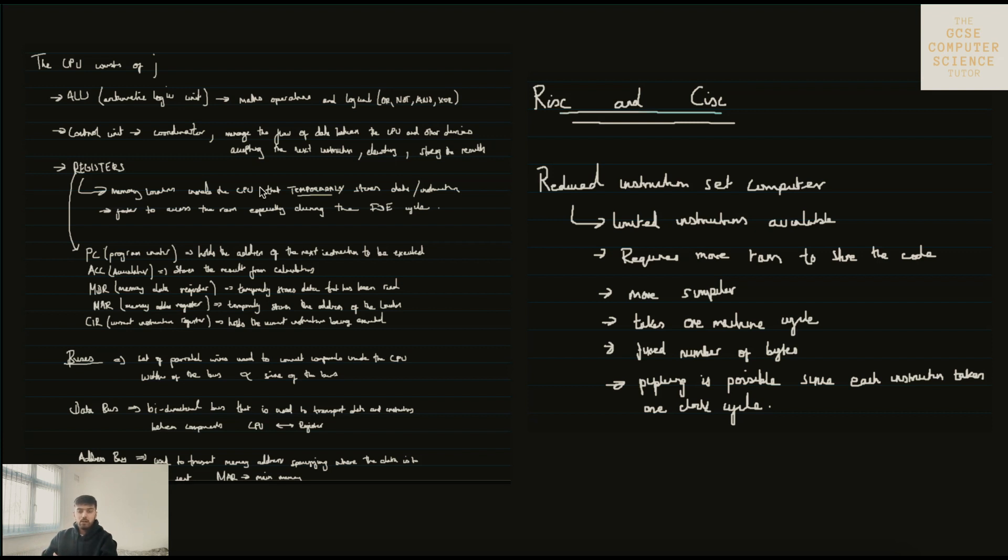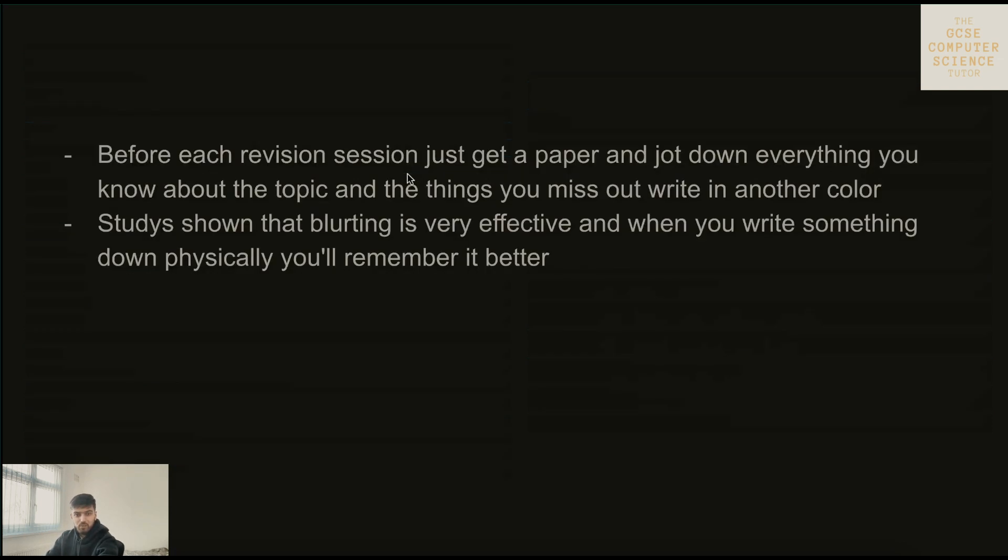Start with ALU - all of these are exam definitions by the way. From the book I learn it, and then the next time, maybe in two days time when I try and revisit some things, I would write down everything that I know about the CPU including all the registers, the buses, whatever the key terminology means. I would repeat this for each revision session that I do and I believe that this is the most important part of retaining that knowledge. First part is to get the knowledge - once you get it you need to remember it. The only way you're going to remember it is if you keep writing it down without having the solutions on you. Studies have shown that blurting is very effective and when you write something down physically you remember it better.